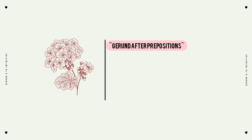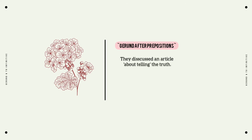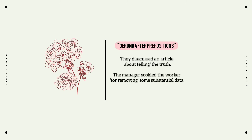The third function of a gerund is gerund after preposition, meaning that the gerund is used after a preposition word. For example: 'They discuss an article about telling the truth' — here 'about' is the preposition followed by the gerund 'telling.' Another example: 'The manager scolded the worker for removing some substantial data.'